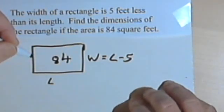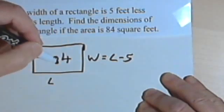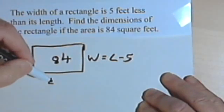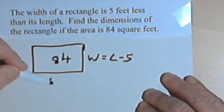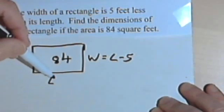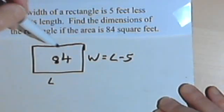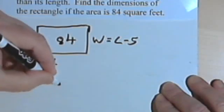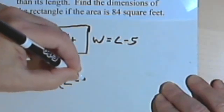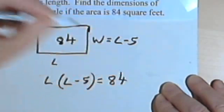And then it tells me the area is 84. Now we want to remember that the area is the length times the width. The area of any rectangle is length times width. So if I multiply the length times the width, the length is L, and the width is L minus 5, I should get 84. So L times L minus 5 equals 84.